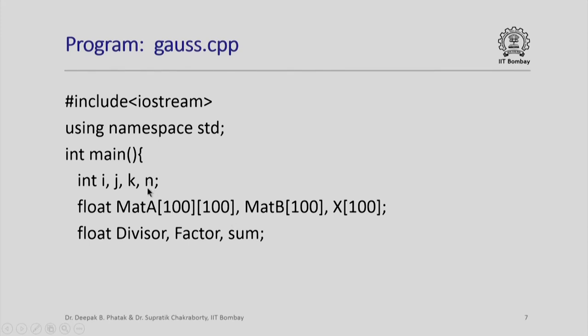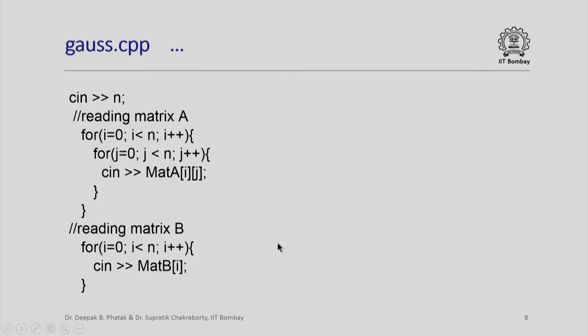Matrix B correspondingly the right hand side will have 100 elements and of course, x[100] which will eventually contain the values which we would have calculated for the unknown variables which can be up to 100. Of course, we assume that the value of n is less than 100. We use additional variables: divisor, factor, sum the meaning of which will become clear as we proceed. First, we read the input, we get the value of n.